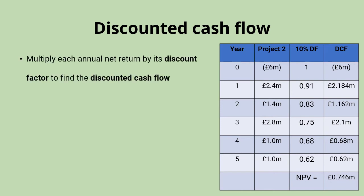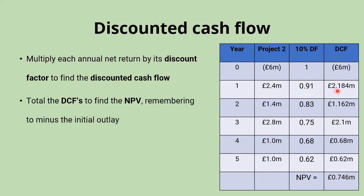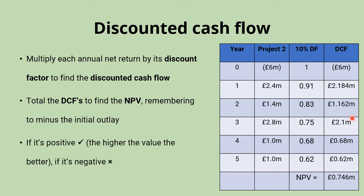We can do the same steps for project two — multiplying each annual net return by the discount factor to find the discounted cash flow for each year, then totaling these discounted cash flows and remembering to minus the initial outlay of six million pounds. That gives us a net present value of 0.746 million pounds, which is better than project one and is positive, suggesting this would be a good investment to go ahead with. But we just need to check project three as well.